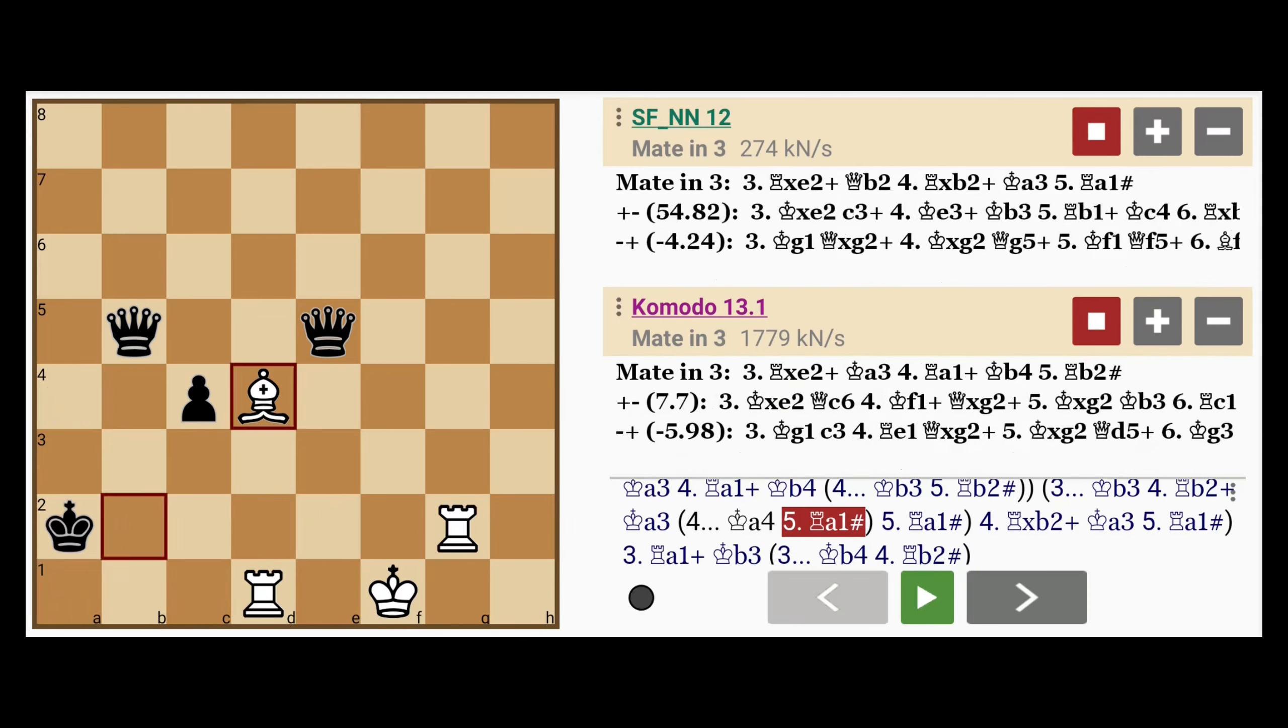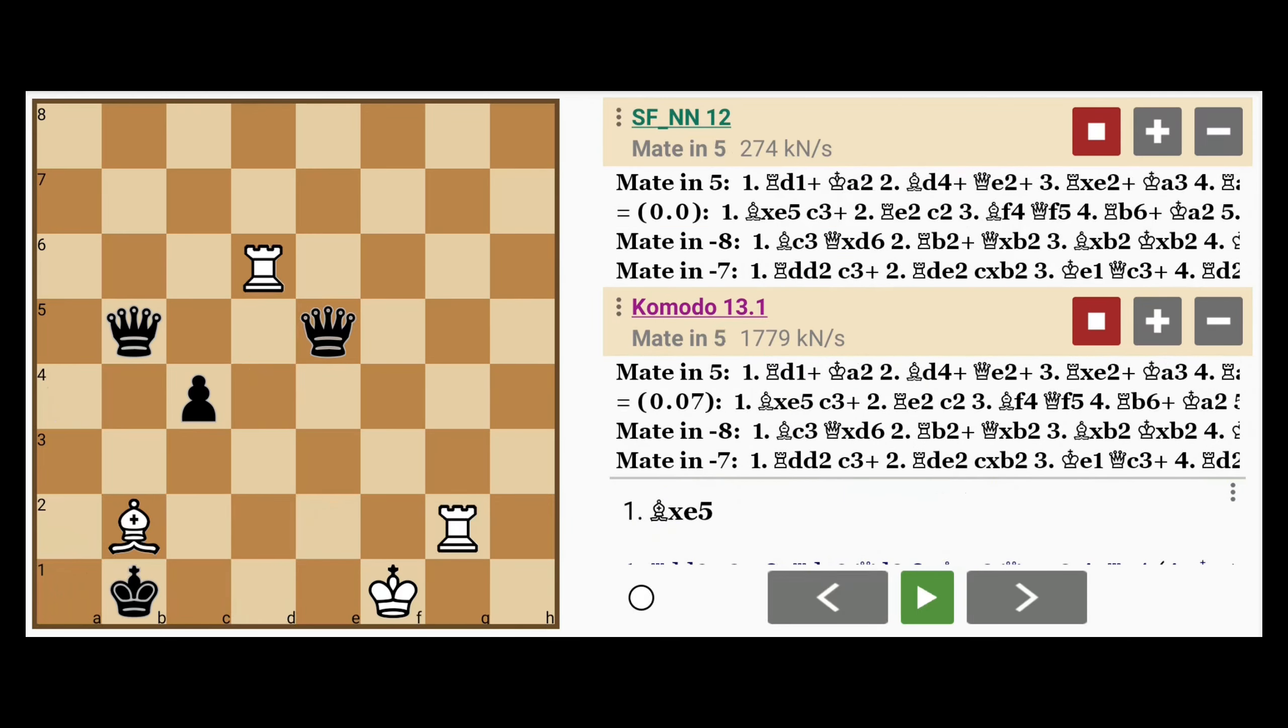So from the original position, white's position, which seems uncertain or even losing, is actually a forced mate. And only one exists, a mate in five. The other moves do indeed result in white being checkmated, or at best a draw, as you can see from the analysis.